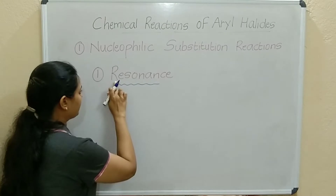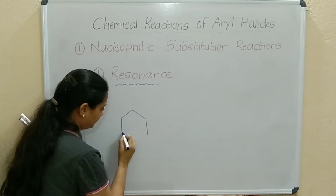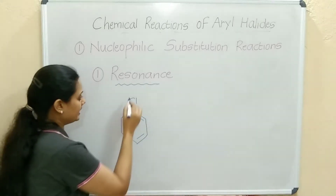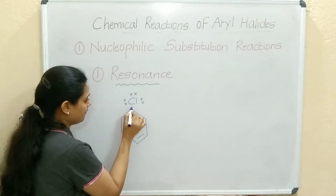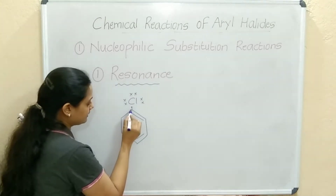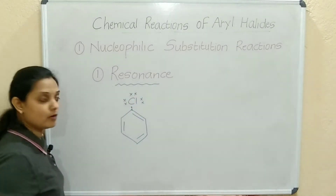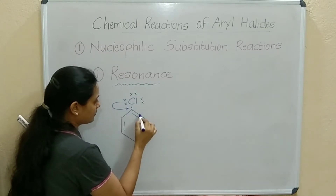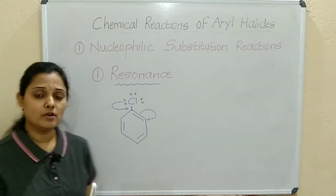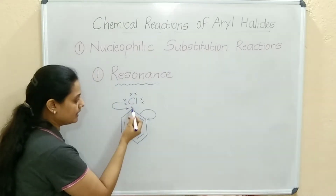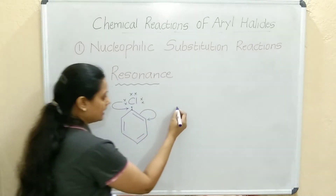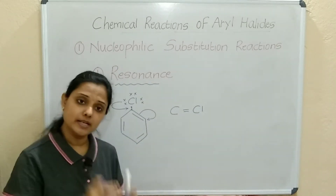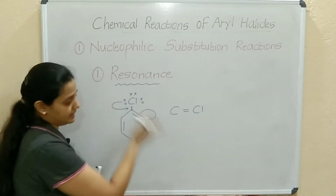The first reason is resonance. Let's take the example of chlorobenzene — a correct aryl halide. Chlorine has three lone pairs of electrons, so it will undergo resonance. During resonance, the lone pair of electrons will form a bond, creating a double bond between the carbon and the chlorine atom — between the carbon and the halogen.